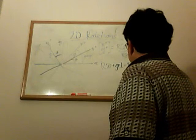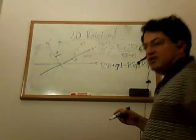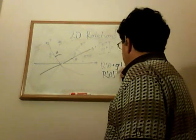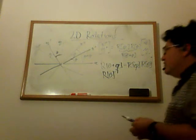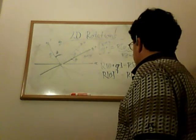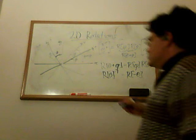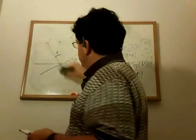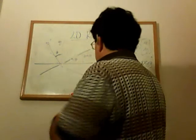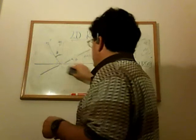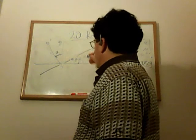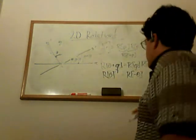We have some other nice identities too. If we do R of theta inverse — if we take the inverse of a rotation by angle theta — that's equal to a rotation by angle minus theta. Remember, theta is positive if it's a counterclockwise rotation. So the inverse is just a rotation by minus theta, because if you rotate counterclockwise by theta and then go back clockwise by theta, you get back to where you started.